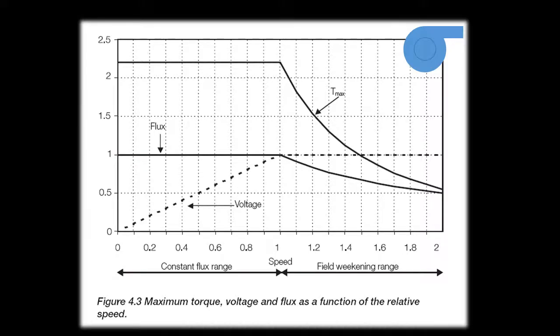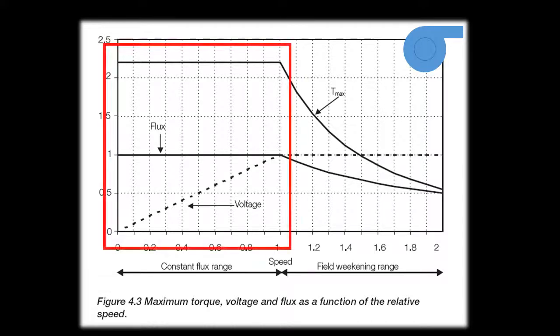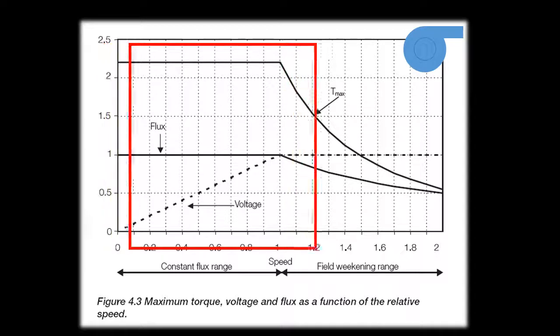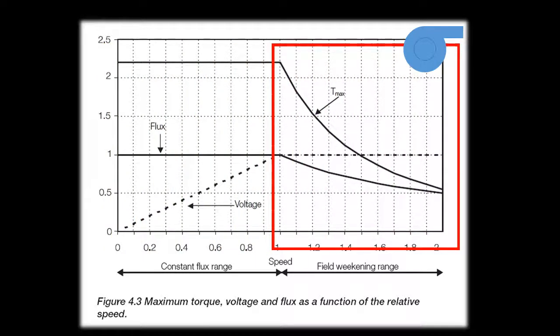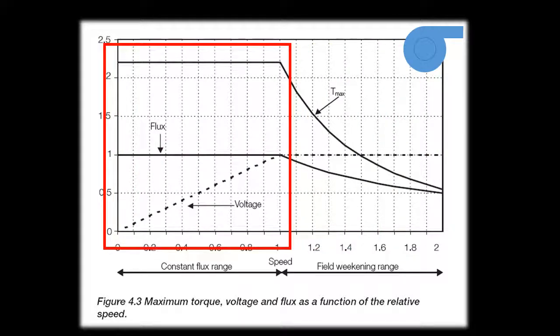A motor's torque-speed relationship can be broken into two defined regions. The constant flux range, seen here as the flat regions of torque and flux, and the field weakening region, seen here with the torque and flux decaying away. In the constant flux range, a constant torque can be maintained by keeping the voltage frequency ratio constant, according to the previous equation. Using a motor in this region can provide a process with VSD motor control while maintaining a constant torque.